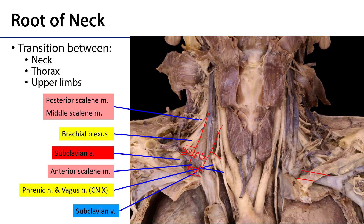In that same plane as the subclavian artery we have a variety of nervous structures. Riding down the root of the neck on the anterior scalene is the phrenic nerve. Medial to this will be the vagus nerve. Posterior to the anterior scalene muscle we have some roots and trunks of the brachial plexus, which serves the upper limbs. This emerges posterior to the anterior scalene but anterior to the combination of middle and posterior scalenes.